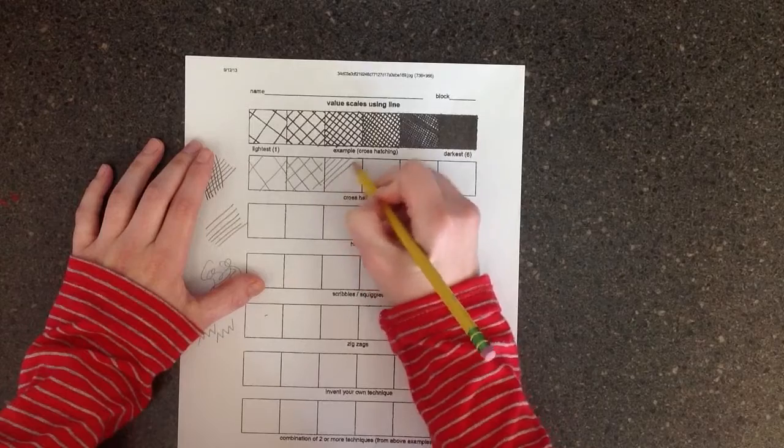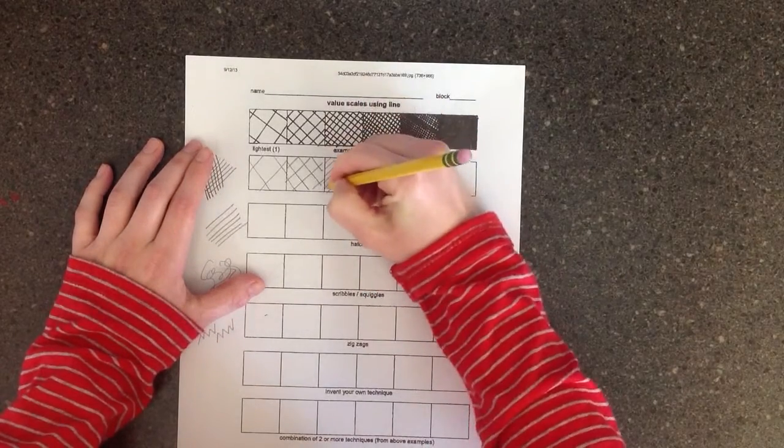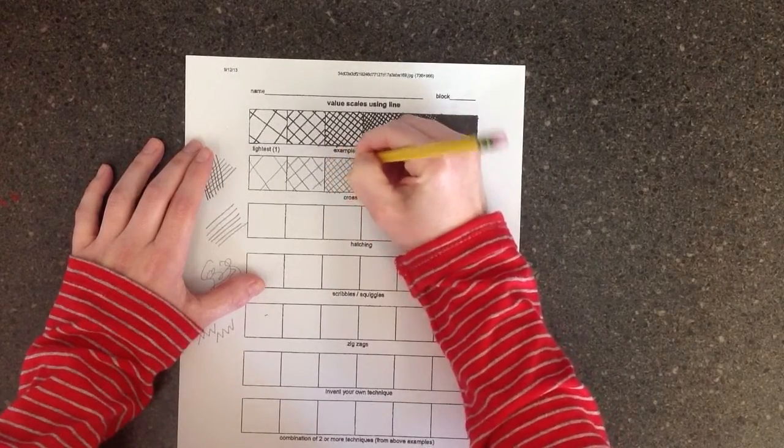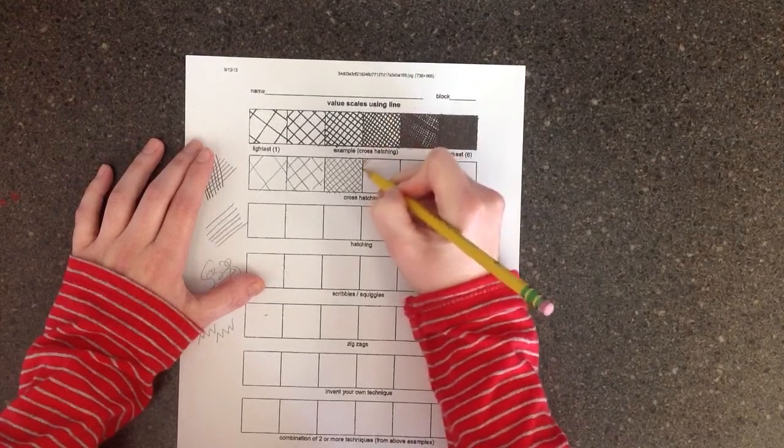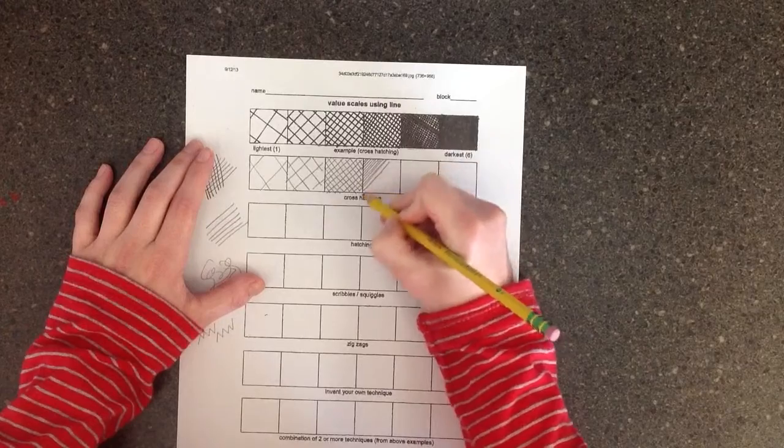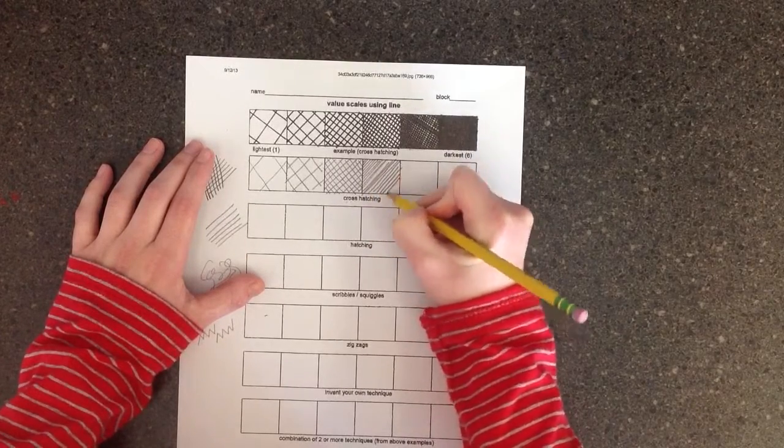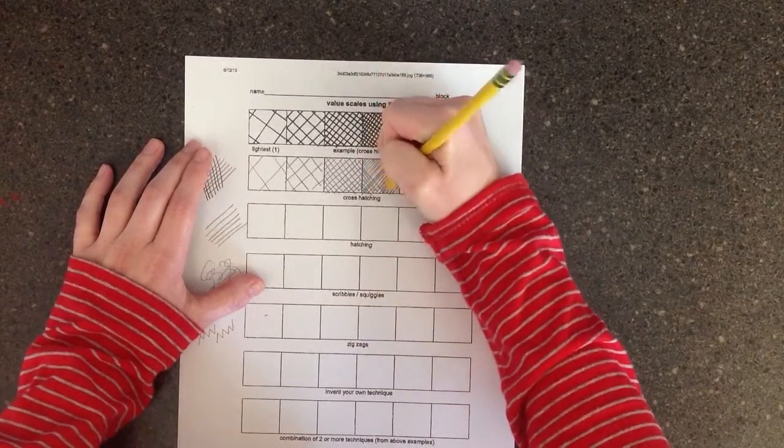And so you just keep getting them closer and closer, and your values will start getting darker. So you're still only using line. You're not coloring anything in, but your eye sees it as a darker value.